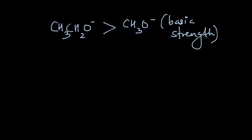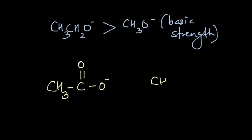Let's take another example. This time we will have an acetate ion — CH₃–C(=O)–O⁻ — and we'll take the same species with one hydrogen replaced by a chlorine atom, and decide which one of them is more basic. The first factor — the atom — fails here because both species have the negative charge on the oxygen atom.